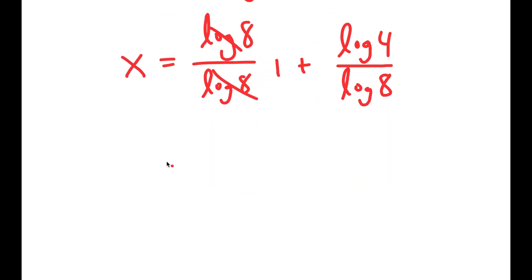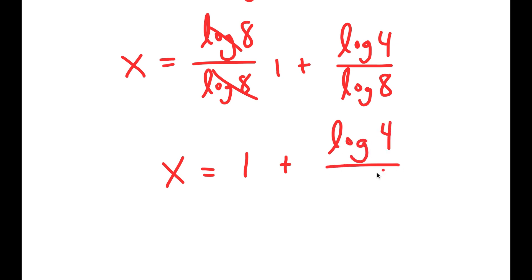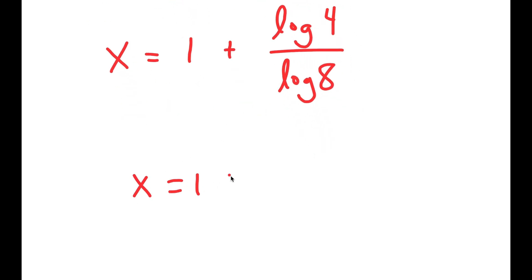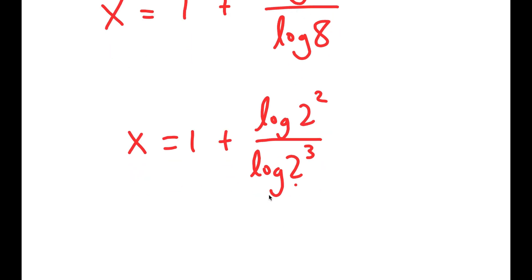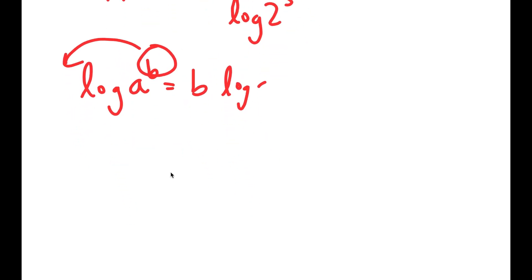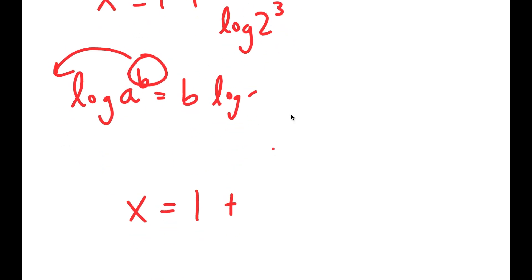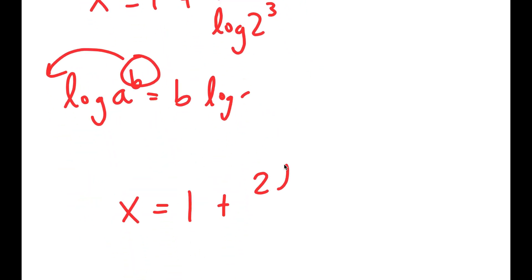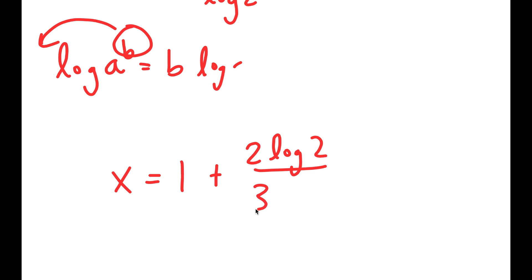These two log 8 terms cancel out to give 1, so x is equal to 1 plus log of 4 over log of 8. Now, log of 4 is the same thing as log of 2 squared, and log of 8 is the same thing as log of 2 to the power of 3. Using the power rule again to move the exponents to the front, I get x is equal to 1 plus 2 times log 2 over 3 times log 2.